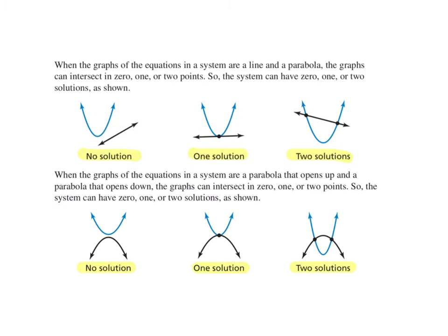When graphs of the equations in a system are a line and a parabola, the graphs can intersect in 0, 1, or 2 points, so the system can have 0, 1, or 2 solutions. Before, we either had no solutions, one solution, or infinitely many solutions. This time we're either going to have 0, 1, or 2 solutions. If our line and our parabola don't touch, we have no solutions. If they touch at one place, we'll have one solution, and if they touch at two places, we will have two solutions.